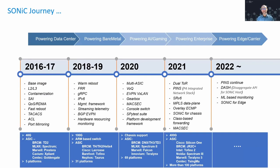To give you a sense of the SONiC journey: SONiC began back in 2016, really targeted on cloud-scaler use cases, and has been powering data centers at Microsoft since then as well as many other cloud scalers. Over time, the feature set supported by SONiC has been grown by the many companies and individual contributors to give the ability to power bare metal scenarios, AI and gaming scenarios, and enterprise scenarios. We're now taking that forward into powering edge, carrier, telco, 5G, and other edge connectivity situations. SONiC is now ready to handle just about all the scenarios that people would want to do with a network switch.